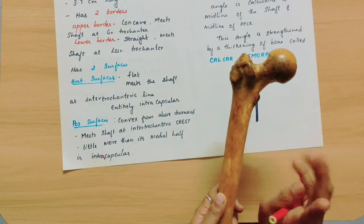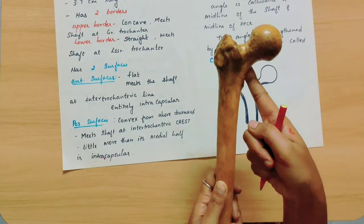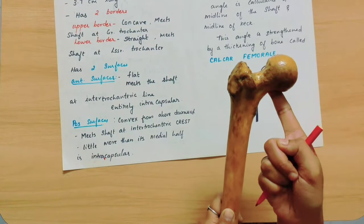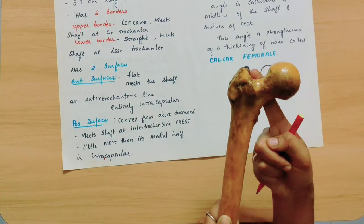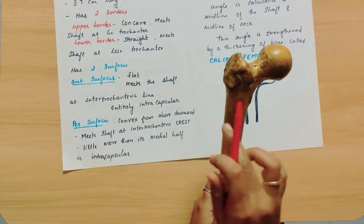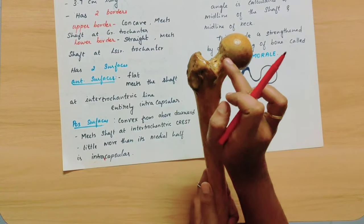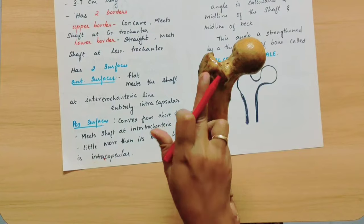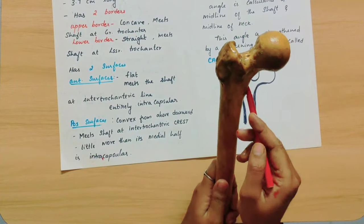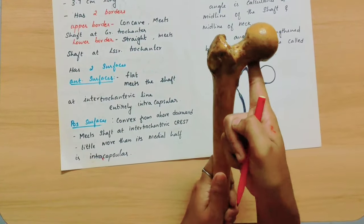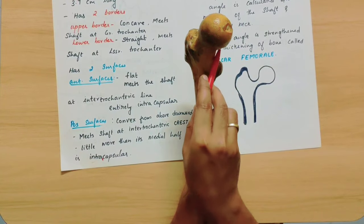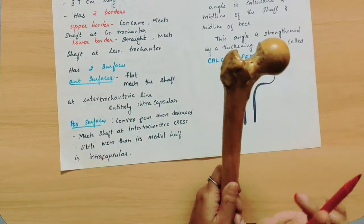The neck has two borders and two surfaces. The upper border meets the shaft at the greater trochanter. The lower border is straight and also meets the lesser trochanter at the shaft. The anterior surface of the neck is flat and meets the shaft at the intertrochandric line.